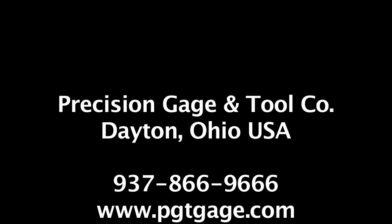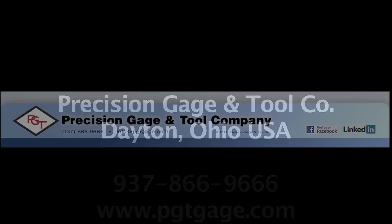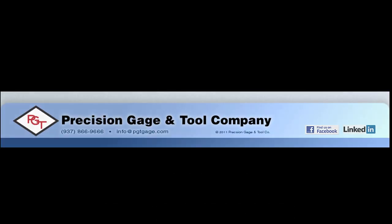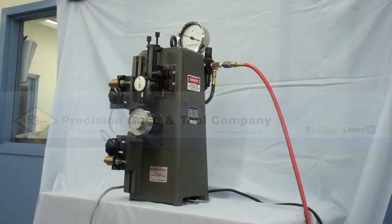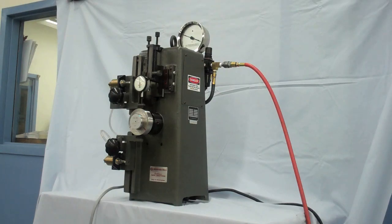The video you are about to watch is of a medium radial play gauge manufactured by Precision Gage and Tool Company in Dayton, Ohio. The medium-sized radial play gauge covers bearings with an internal diameter ranging from 8 to 200 millimeters in size.